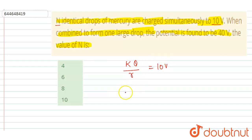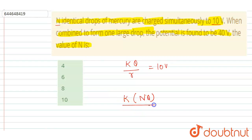Now they are combined to form a single drop. The single drop will have a total charge of n times q. So k times nq divided by capital R equals to 40 volt.